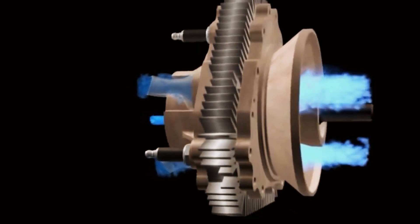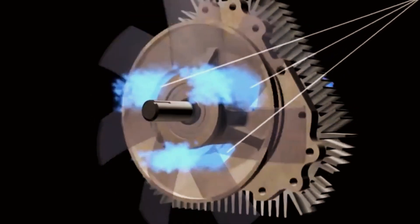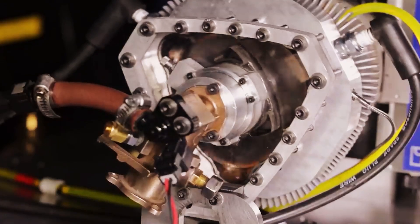Sealing is essential in both. In Wankel engines, sealing is on the moving rotors, requiring constant lubrication. In the XTS, fixed sealing simplifies lubrication, a challenge in the Wankel.